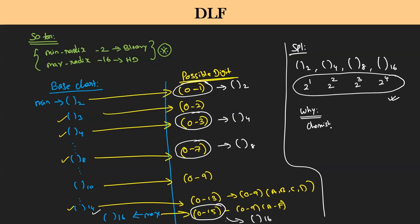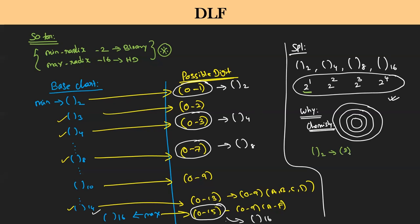In chemistry, in your childhood, you could have studied the shell concept — S, P, D, F — and when one shell is complete you start the next. The same concept I am going to apply here. Base 2 means I am going to give only one digit. Base 4 means I am going to give 2 digits. Base 8 means I am going to give 3 digits. And base 16 means you are going to have 4 digits.